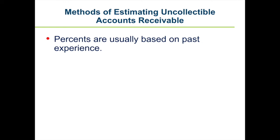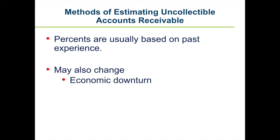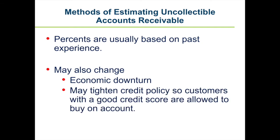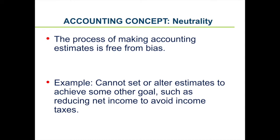However, a business might have valid reasons to change these estimates. For example, an economic downturn could cause more customers to be unable to pay, or a business might tighten its credit policy so only customers with good credit scores can buy on account. A business must not change its estimate to achieve other goals, such as reducing net income to avoid taxes. The book value of accounts receivable must be a reasonable and unbiased estimate, which is the accounting concept of neutrality.